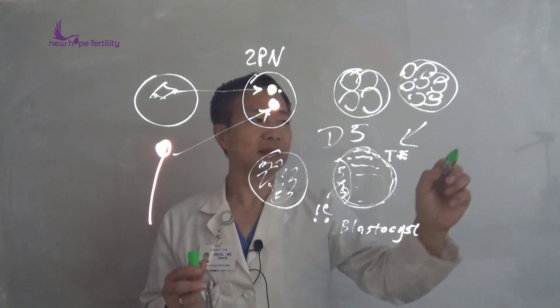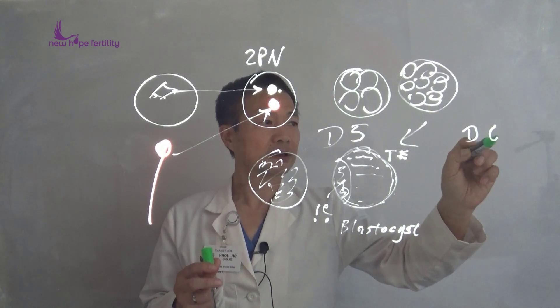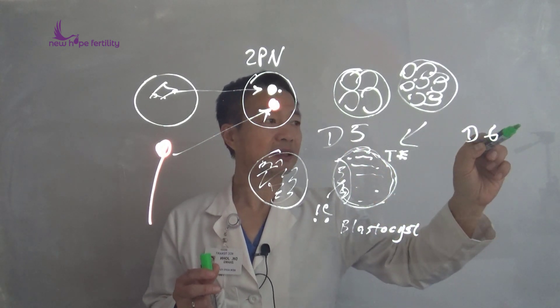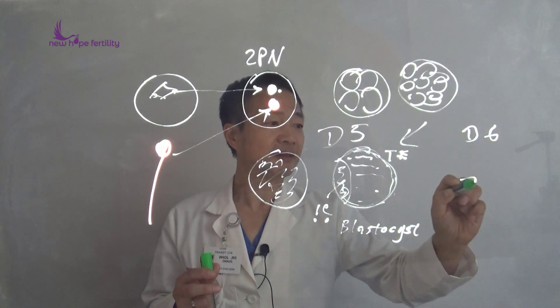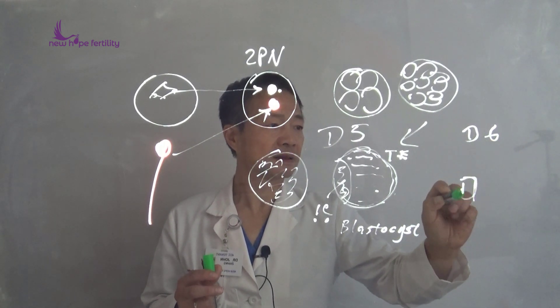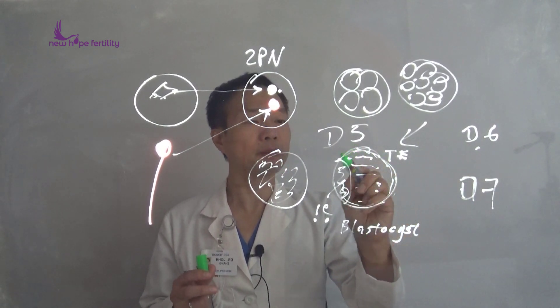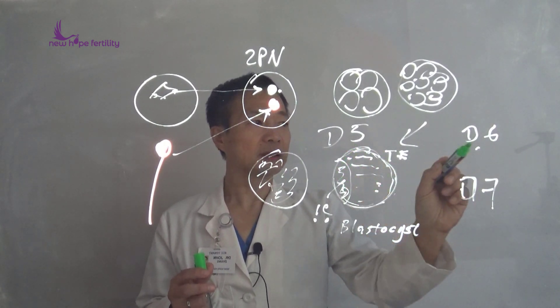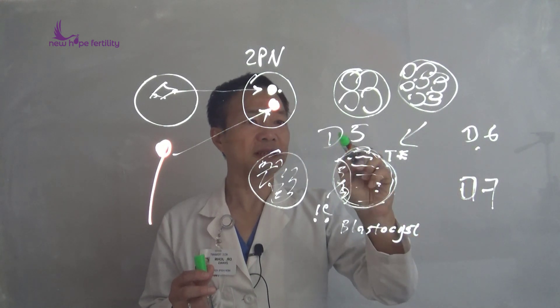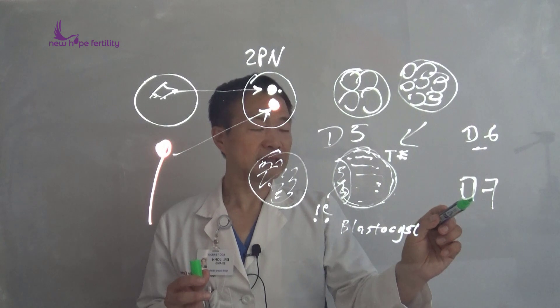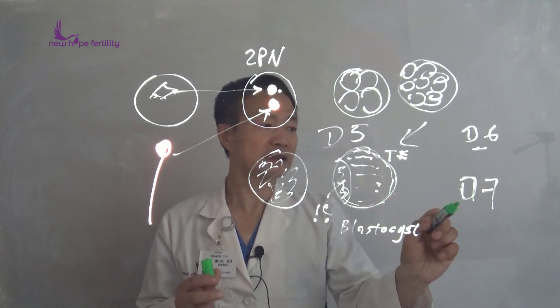However, sometimes the embryo may take six days to reach the blastocyst stage, or sometimes seven days. Day 6 and day 7 are both blastocyst stage embryos, but day 6 means this blastocyst-stage embryo takes six days to develop, and day 7 means it takes seven days.